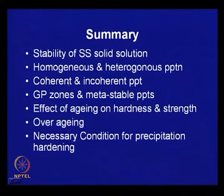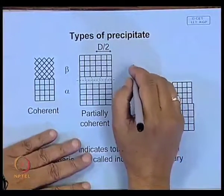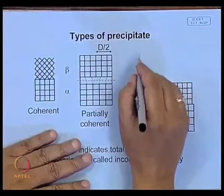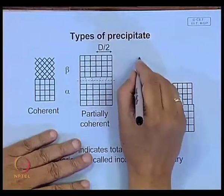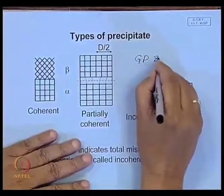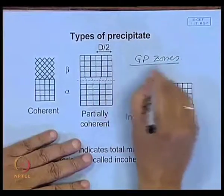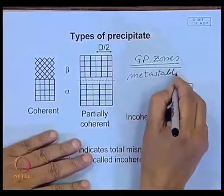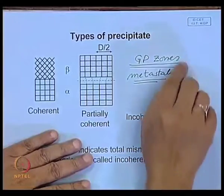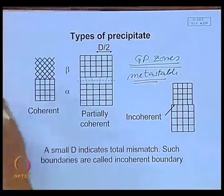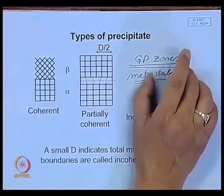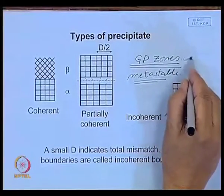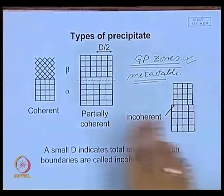These coherent precipitates, first observed in aluminum-copper alloys, were confirmed through X-ray diffraction by Guinier and Preston — who showed strain fields associated with the precipitates. They are therefore known as GP zones. GP zones are metastable precipitates that initially form during aging. Their free energy is higher than the stable equilibrium phase, but due to kinetic considerations — particularly the low surface free energy barrier — they appear in the matrix before the stable precipitates.